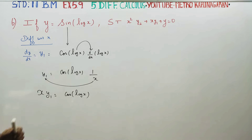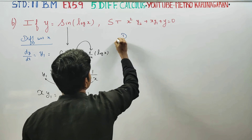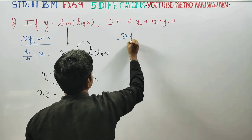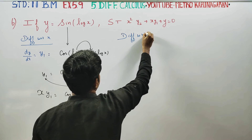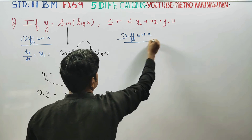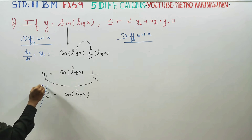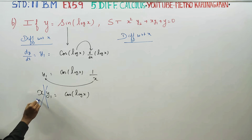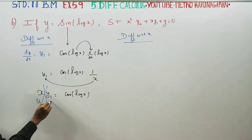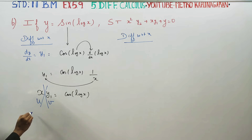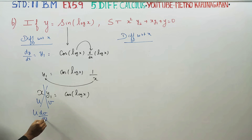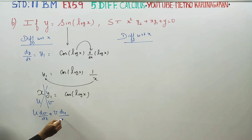That's why we start the differentiation again. I am going to differentiate with respect to x. This is the value of x. Product rule applies here: for u and v, u differentiate with v, and v differentiate with u.